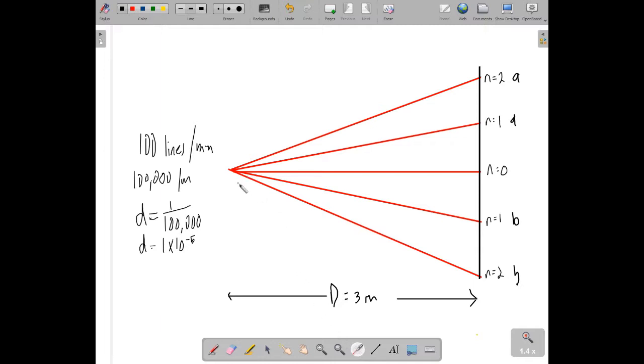The diffraction grating will give us a slightly different type of pattern to the double slit, and because the slit separation is so much smaller we get very different angles. So we can no longer use a small angle approximation, so the equation that defines it is a little bit different.